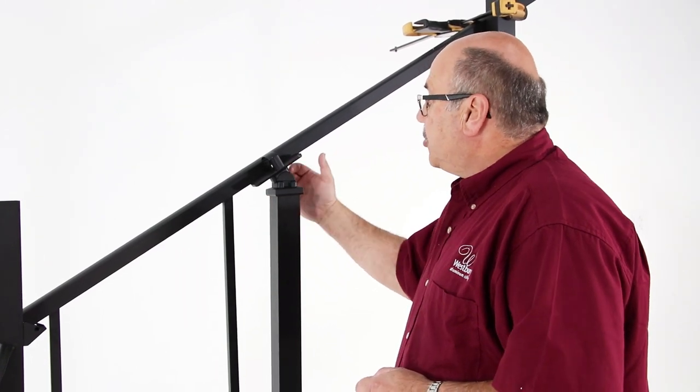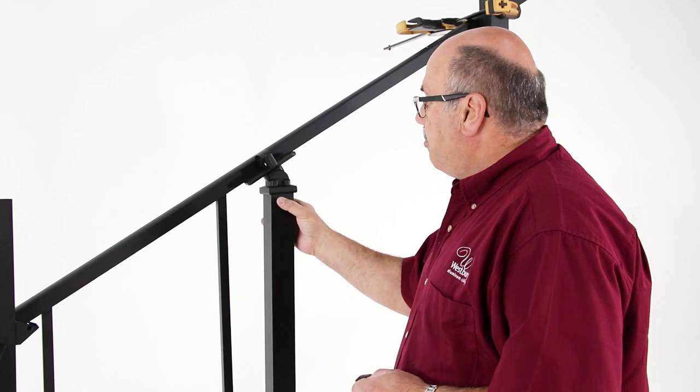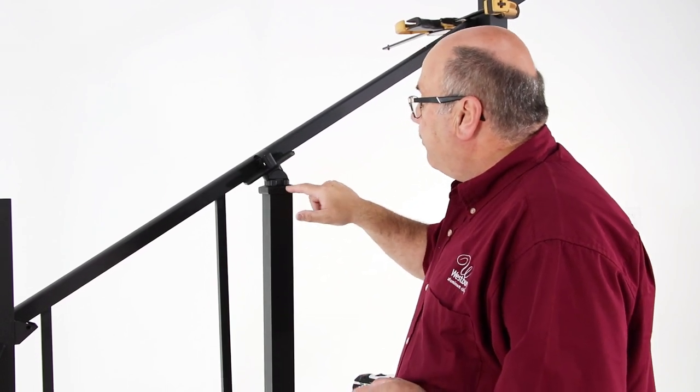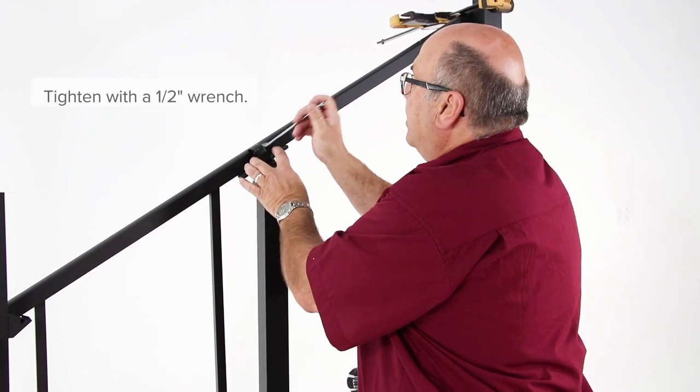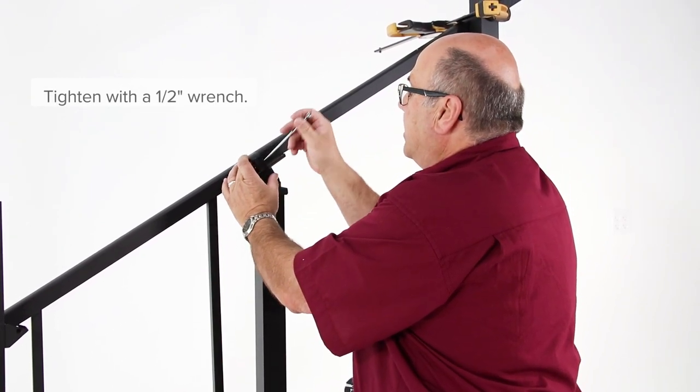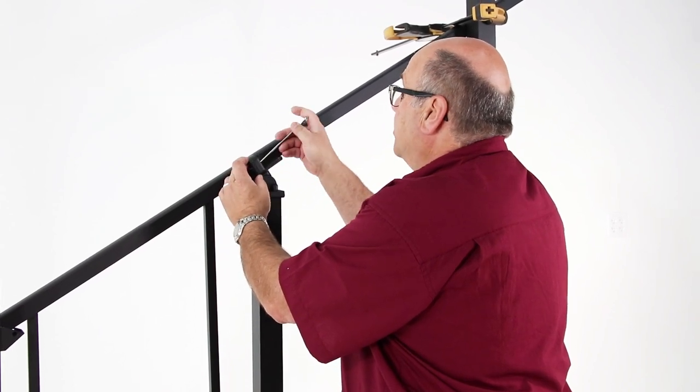I have attached with two screws the stair crossover to the post underneath this flare, and now we are ready to tighten this nut because we can determine the plane of the top rail. Once I tighten this nut, this will be fixed in its final position.